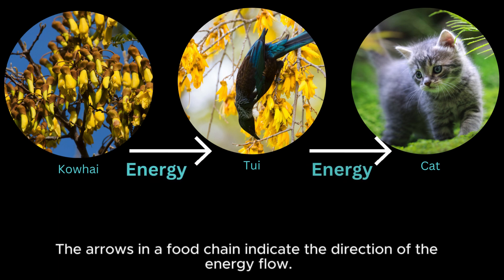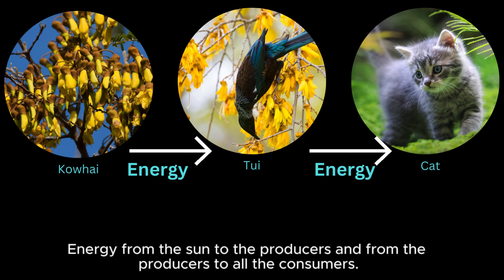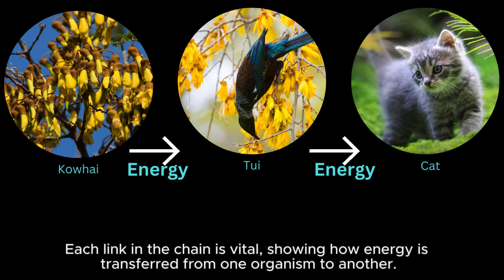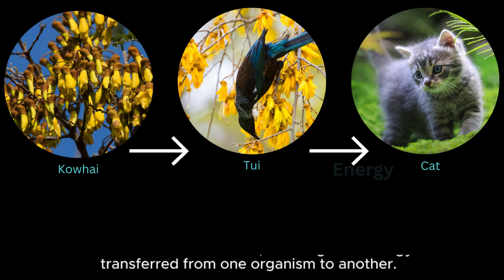The arrows in a food chain indicate the direction of the energy flow — from the sun to the producers, and from the producers to all the consumers. Food chains can vary in complexity, sometimes containing multiple carnivores. Each link in the chain is vital, showing how energy is transferred from one organism to another.